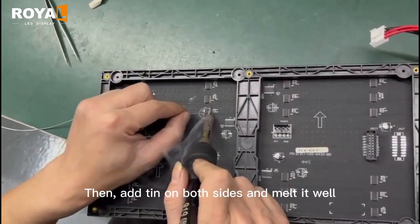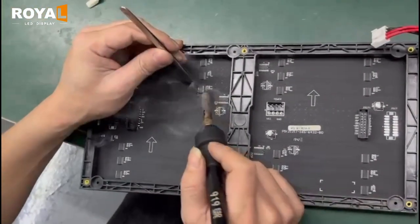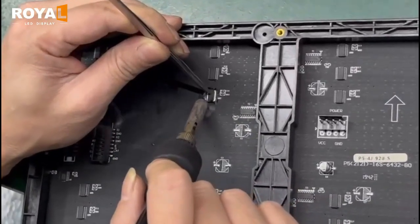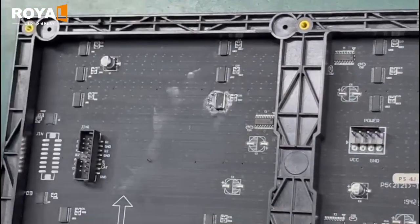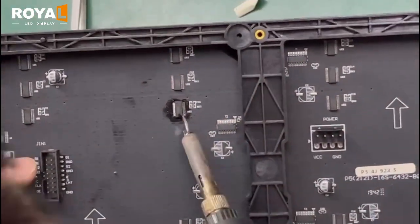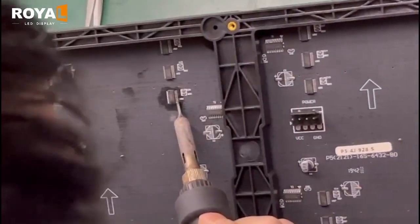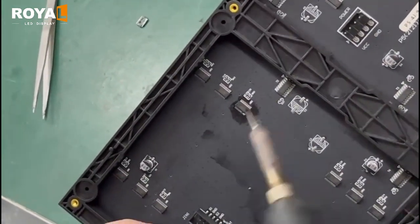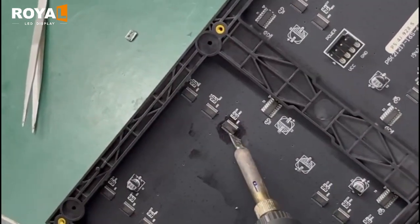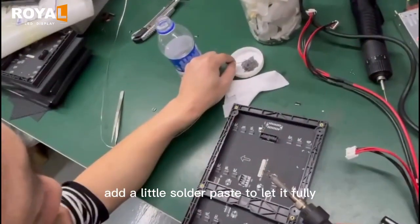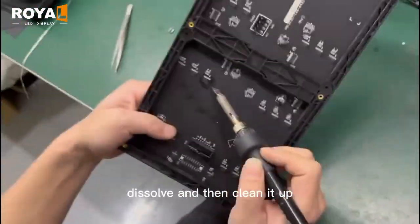Then add tin on both sides and melt it well. Clean up the excess tin. If it is not clean, add a little solder paste to let it fully dissolve and then clean it up.